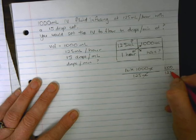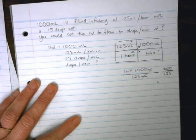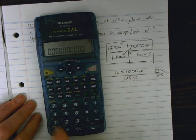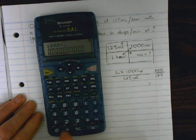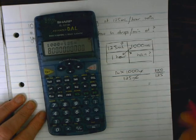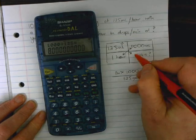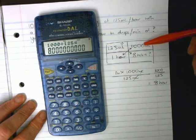Divided by 125, we can use our calculator if we need to. 1000 divided by 125 equals 8. So 8 hours goes in here.